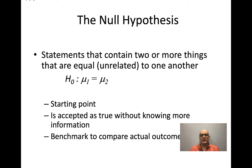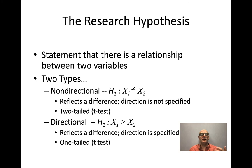The opposite of the null hypothesis is the research hypothesis. We tend to think in terms of the research hypothesis, even though statisticians think in terms of the null hypothesis. The research hypothesis is a statement that there's a relationship between two variables — for example, a relationship between caffeine intake and test performance, or between a type of policy and a kind of outcome.